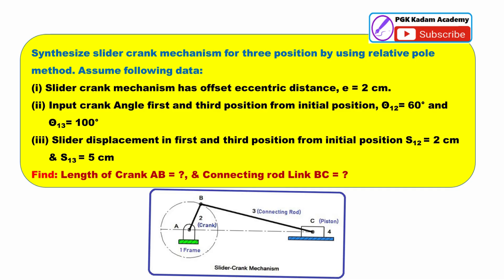Find the length of crank AB and the length of connecting rod link BC.